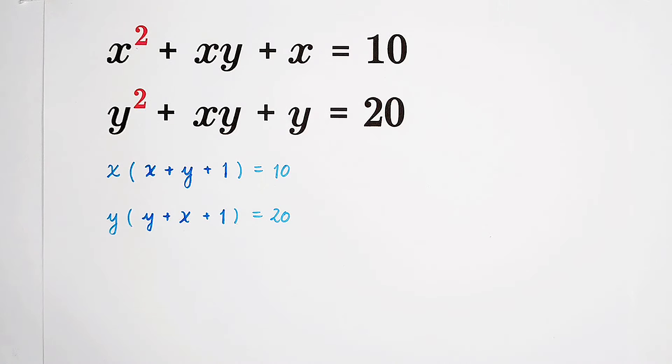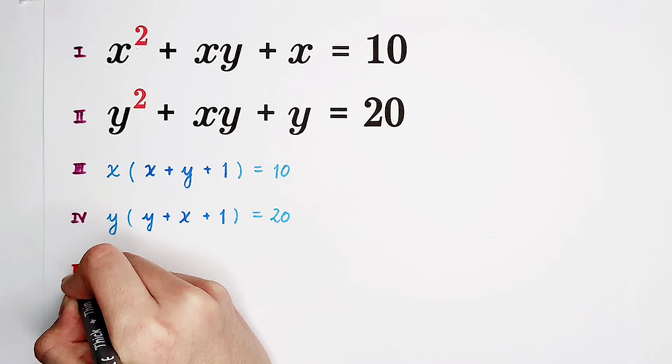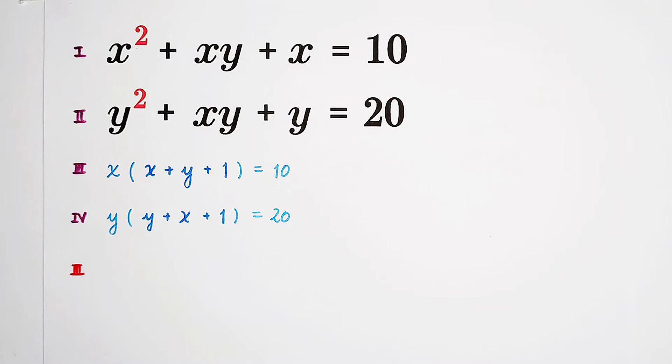We can clearly see that on the left side of both new equations, there is a common factor: x plus y plus 1. So now what can we do? I'd like to divide equation three by equation four.